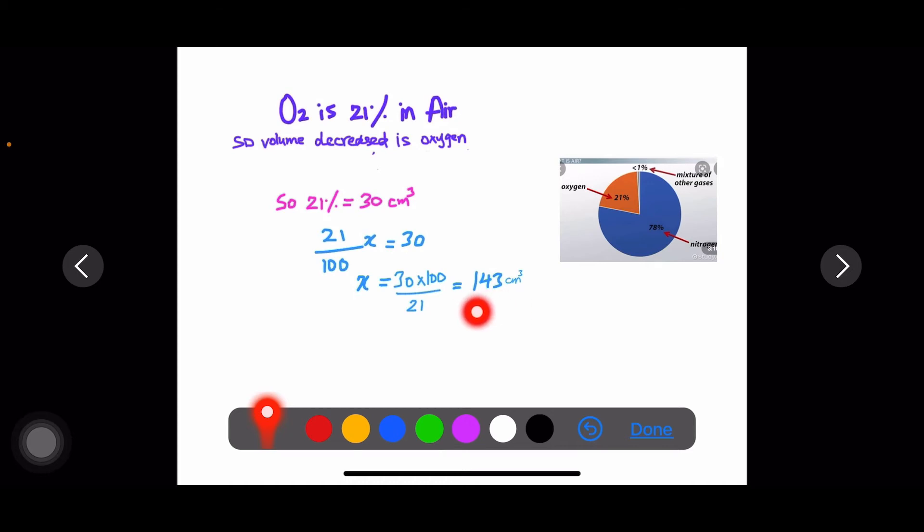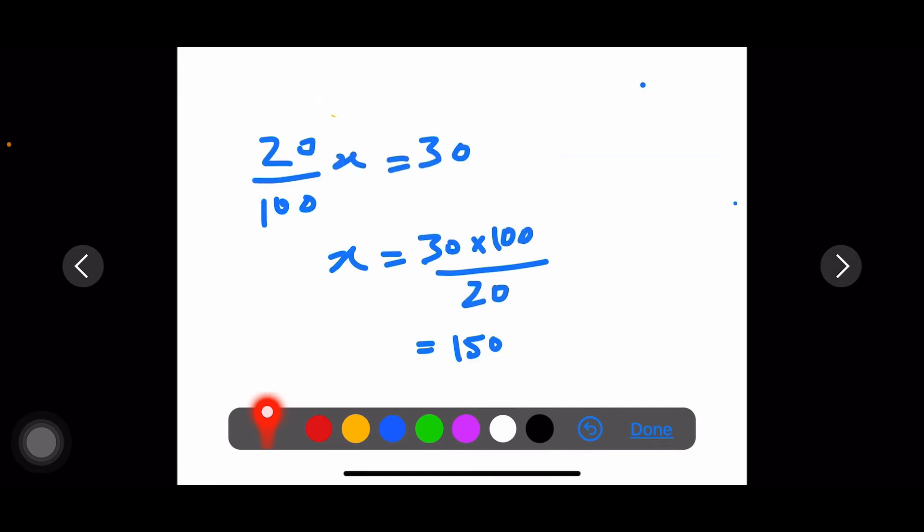The closest value is this one, 143 cubic centimeters. If we assume that the oxygen was 20% of the air, then we can even get the closest answer, 150 cubic centimeters.